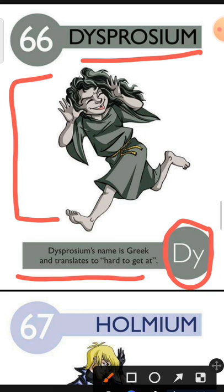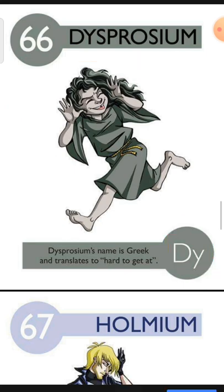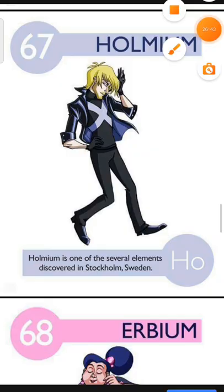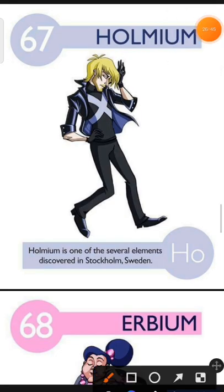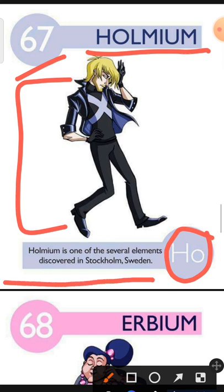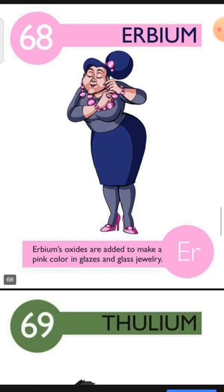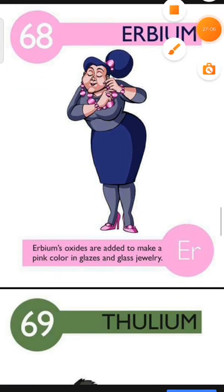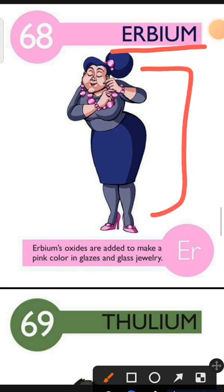Element number 67 is Holmium. The characteristic of Holmium is: Holmium is one of several elements discovered in Stockholm, Sweden. Element number 68 is Erbium. The characteristic of Erbium is: Erbium's oxides are added to make a pink colour in glazes and glass jewellery.